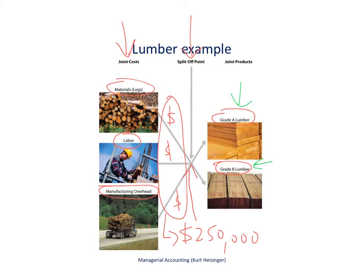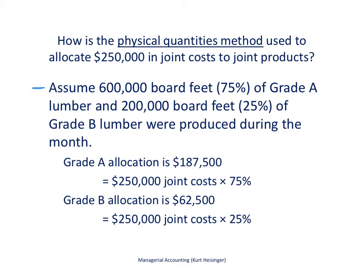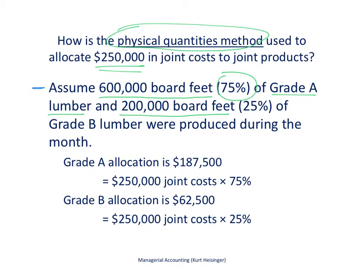There are two different ways to do that. The first approach is called the physical quantities method. We're trying to figure out how to allocate the $250,000 in joint costs. Let's assume that 600,000 board feet of grade A lumber is produced from those logs and 200,000 board feet of grade B lumber was produced during the month. We'll take the percentage — 75%, which is 600,000 divided by the total of 800,000 board feet produced — and allocate 75% of our joint costs to the grade A lumber.